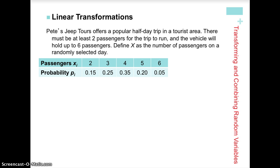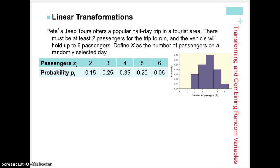We'll take a look at an example from your book. Pete's Jeep Tours has a half-day trip — he requires two passengers for the trip to run and can take up to six passengers. So our random variable X, the number of passengers on any randomly selected day, goes between two and six, with a probability associated with each value. When we graph it, the discrete distribution looks like a histogram with rectangles.